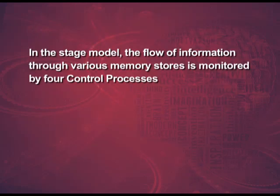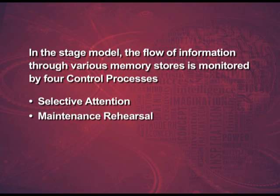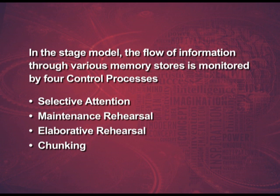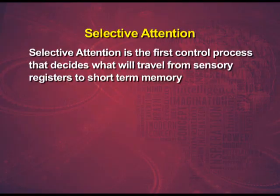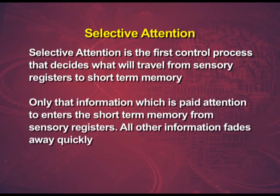In the stage model, the flow of information through various memory stores is monitored by four control processes: selective attention, maintenance rehearsal, elaborative rehearsal and chunking. Selective attention is the first control process that decides what will travel from sensory registers to the short-term memory. Only information that is paid attention to enters the STM from sensory registers; all other information fades away quickly.